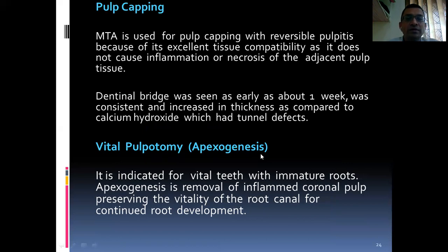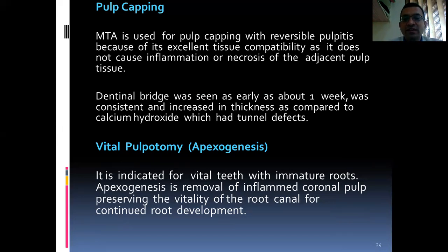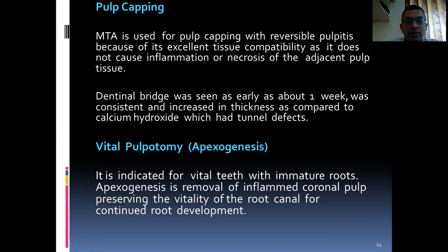Pulp capping: MTA is used for pulp capping with reversible pulpitis because of its excellent tissue compatibility, as it does not cause inflammation or necrosis of the adjacent pulp tissue. Dentinal bridge was seen as early as one week, was consistent, and increased in thickness compared to calcium hydroxide, which had tunnel defects. It is also used for vital pulpotomy and apexogenesis, indicated for vital teeth with immature roots. Apexogenesis is the removal of the inflamed coronal pulp while preserving the vitality of the root canal for continued root development.